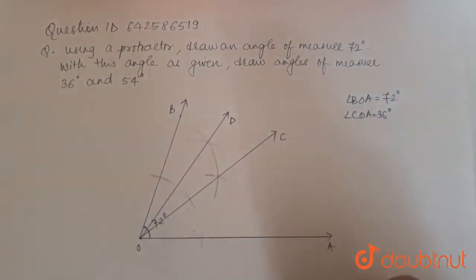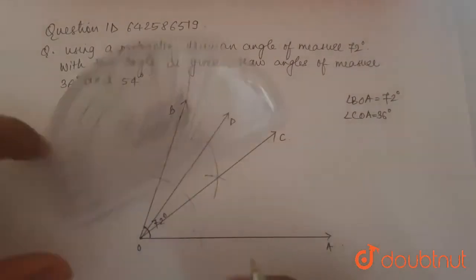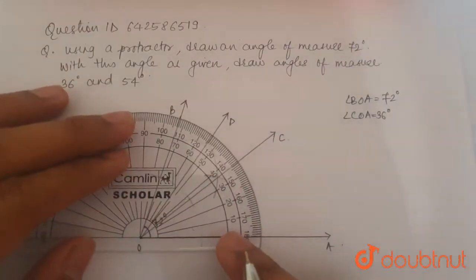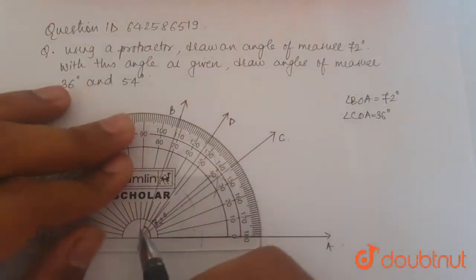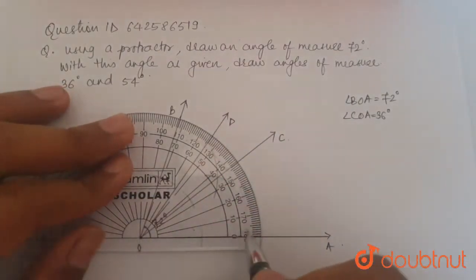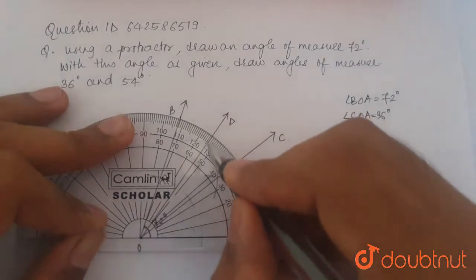Now we join point O with this new point of intersection. Let's call this D. And if now we measure angle DOA, over here angle DOA, we get OA is on 0 degree line and OD is on 54 degree line.